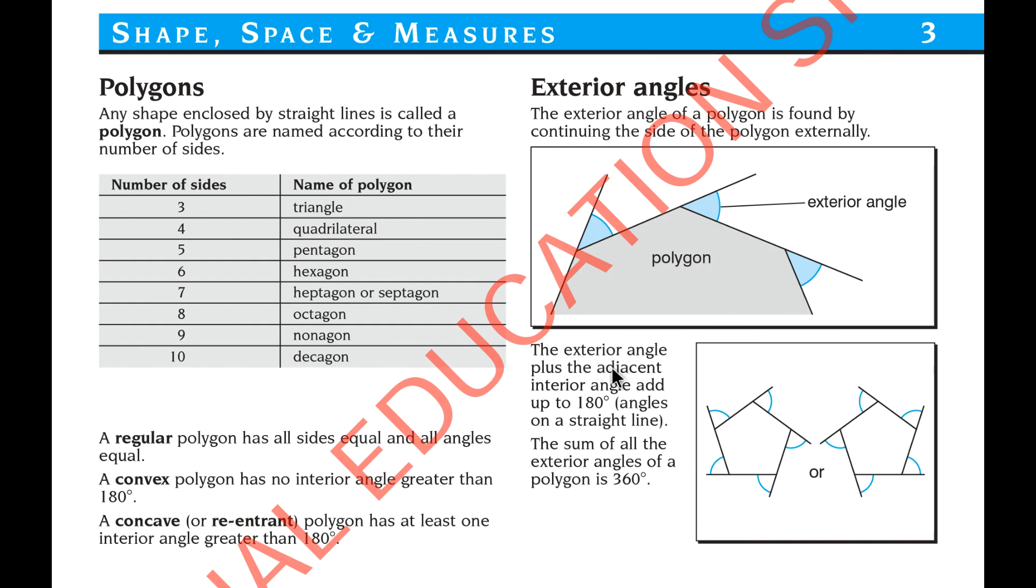The exterior angle plus the adjacent interior angle add up to 180 degrees—angles on a straight line. The sum of all the exterior angles of a polygon is 360 degrees. So if you add this angle plus this angle, it makes 180 degrees.